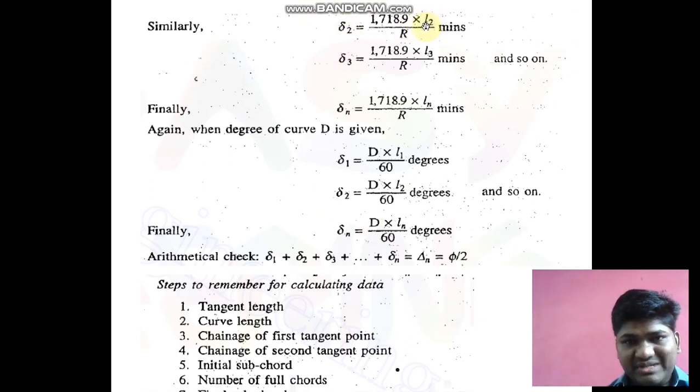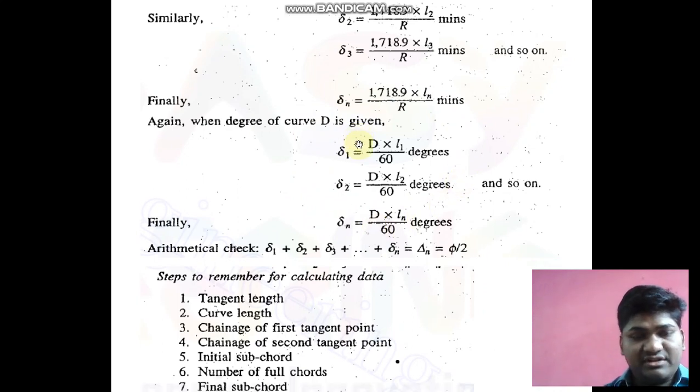Similarly, I can calculate delta2. For delta2, the L1 value is replaced by L2, so delta2 will be 1718.9 × L2 / r. Units again will be minutes. This process goes on, and I can find any number of angles, delta n.